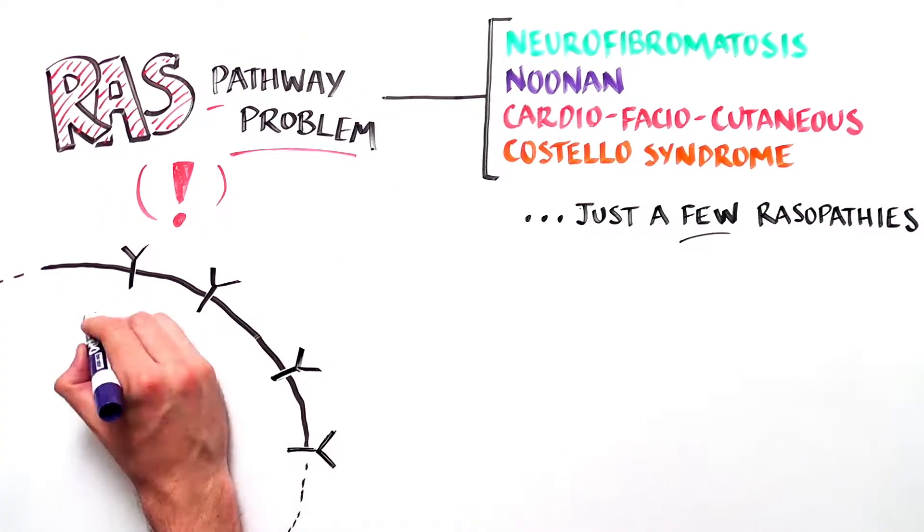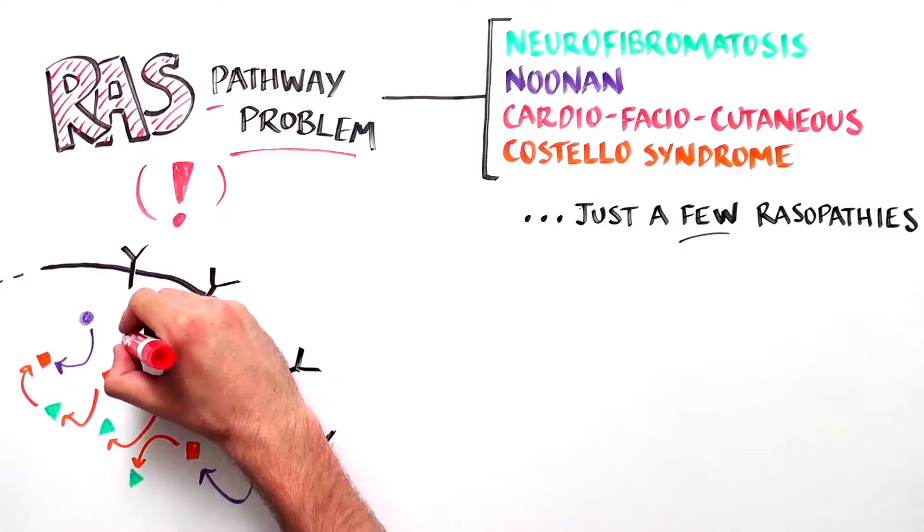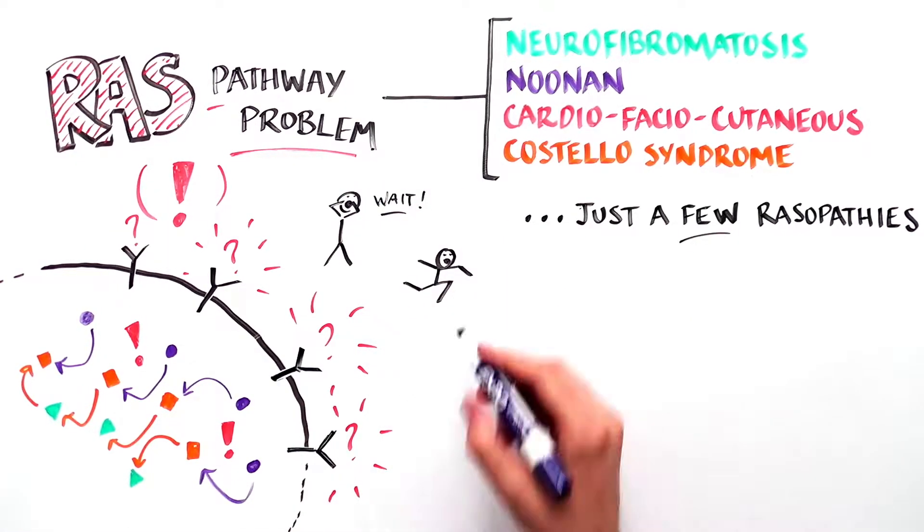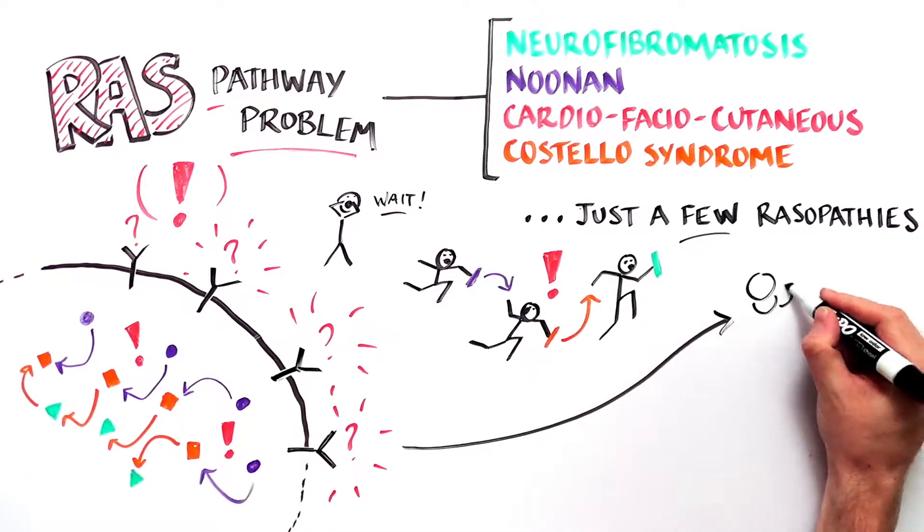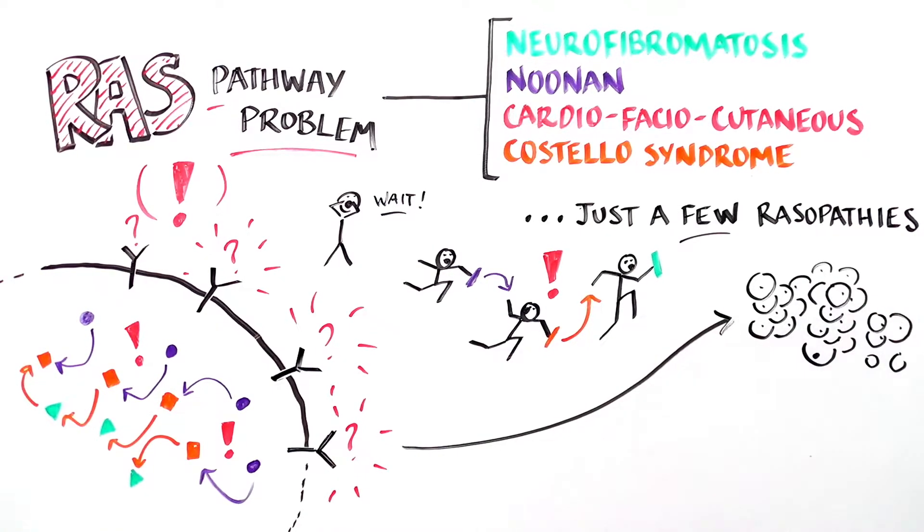Having a RASopathy means that there is a problem with one of the steps in the pathway. For example, one step may be triggered without an initial signal. It is like having the RAS relay team running the race in your cells even though the starting bell never rang. This causes the cell to respond to a signal that was never there, which leads to serious miscommunication between cells and serious consequences. For example, it may cause the cell to divide when in fact it should be dying.